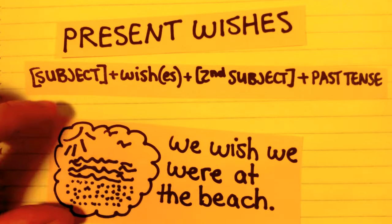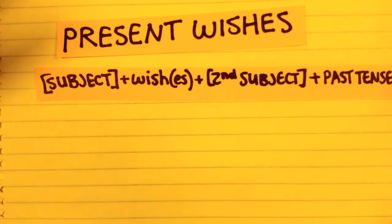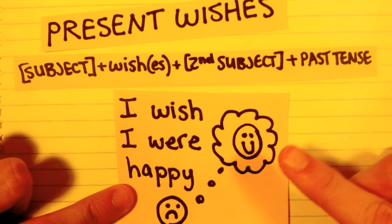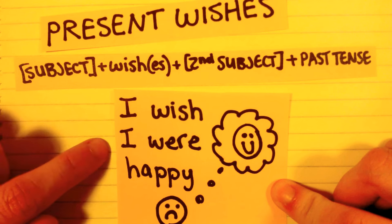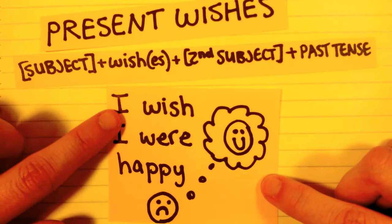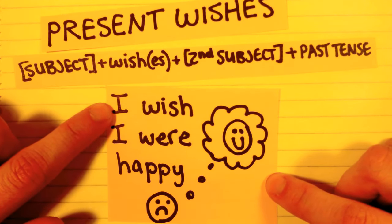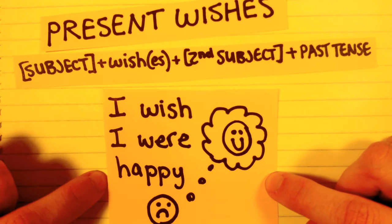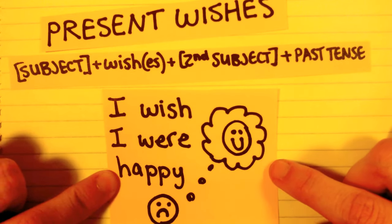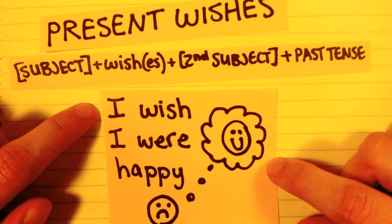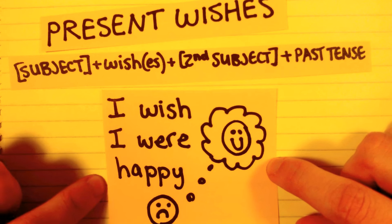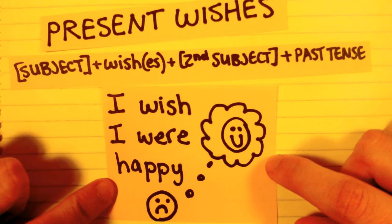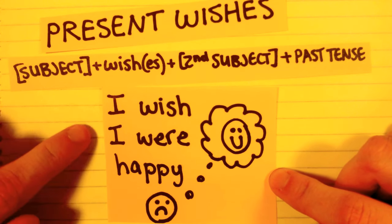We don't use 'was.' So instead of saying 'I wish I was happy,' we would say 'I wish I were happy.' But many native speakers will say 'I wish I was happy,' and many people will tell you that it is correct. So you can say 'I wish I was happy' — 'was' being the past tense of 'to be.' But it is grammatically correct to say 'I wish I were happy.' Just remember you should say 'I wish I were happy,' but everyone will understand you if you say 'I wish I was happy.'